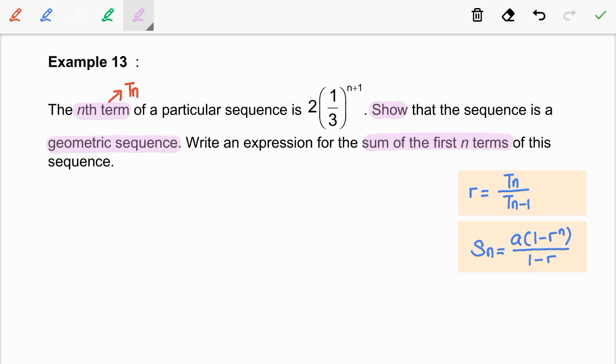So, to show the sequence is a geometric sequence, tn divided by tn-1 must be a constant. Since tn is already given in the question, thus we are going to get tn-1.